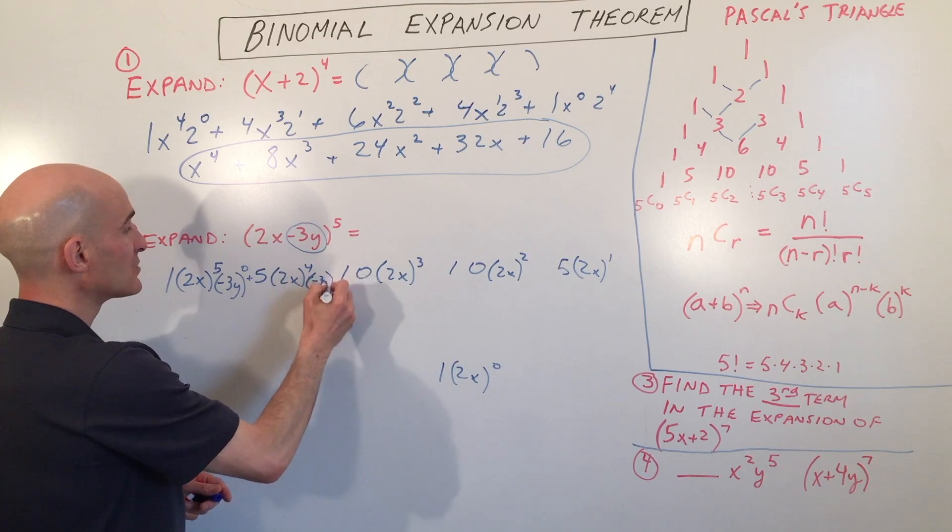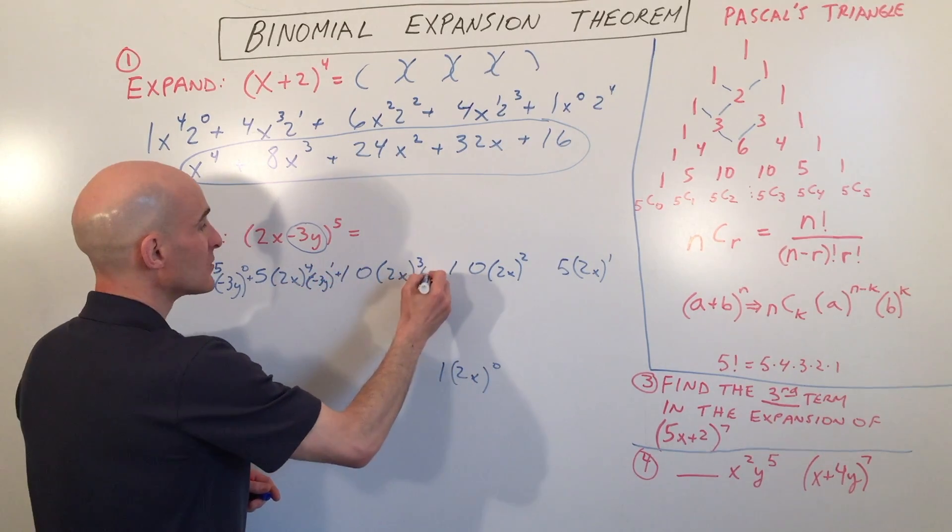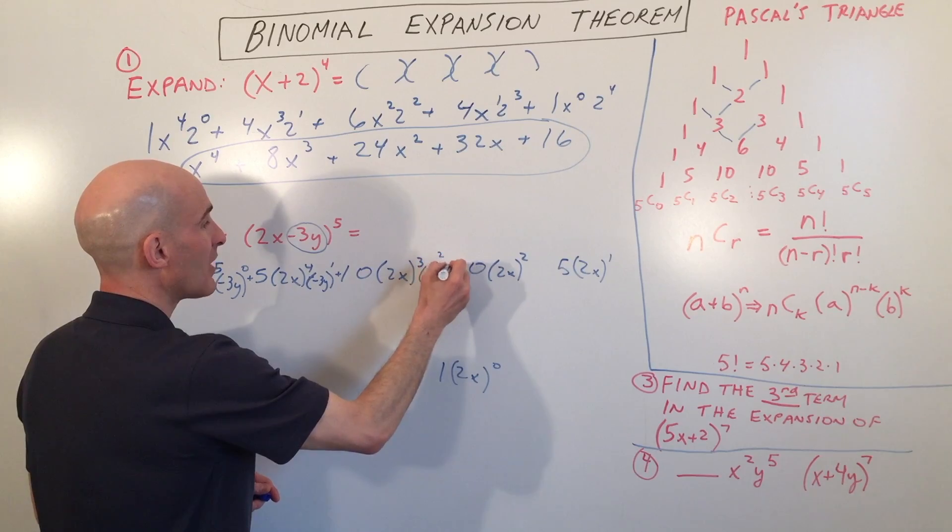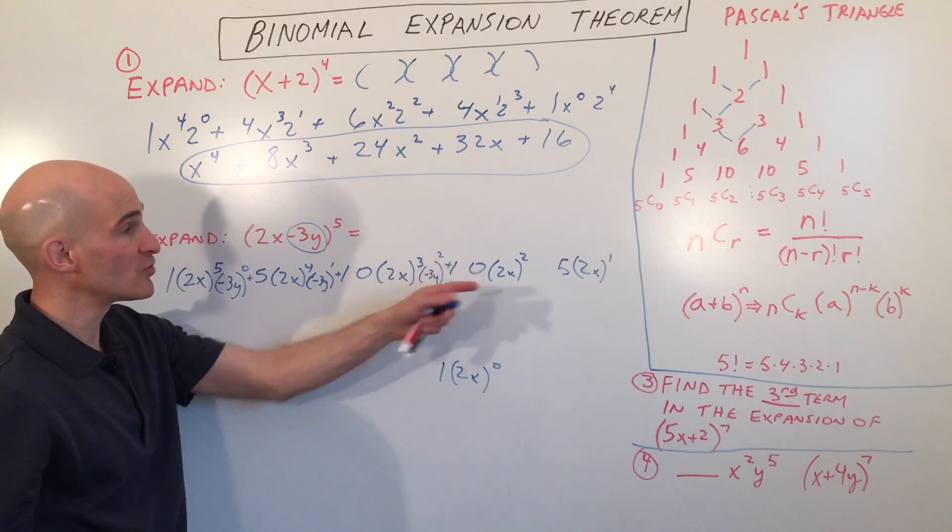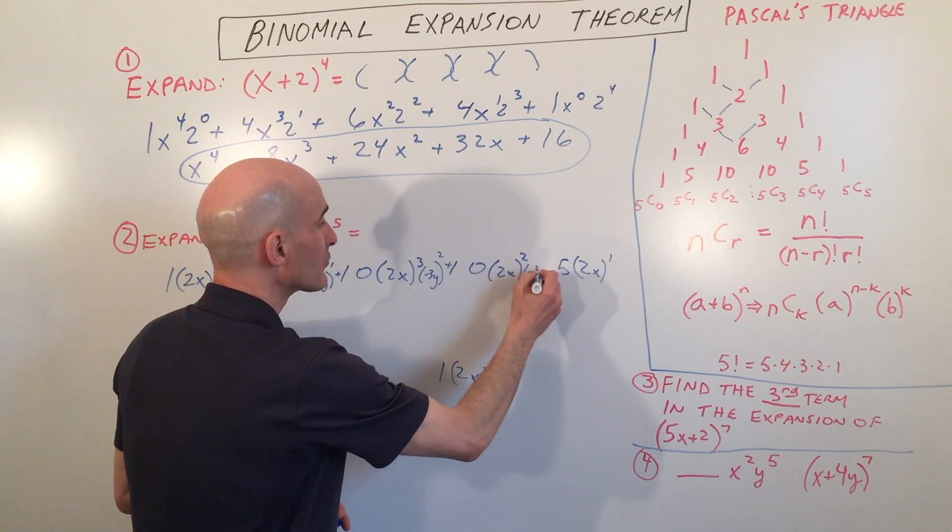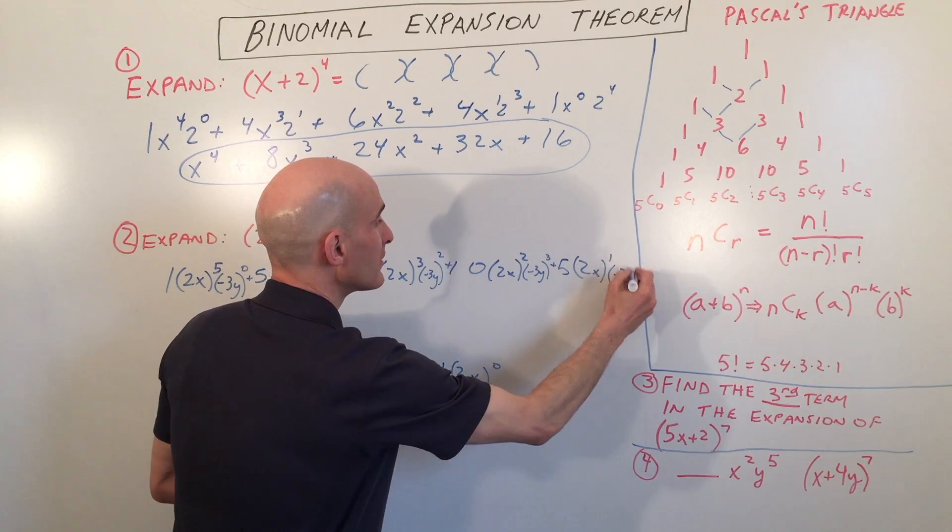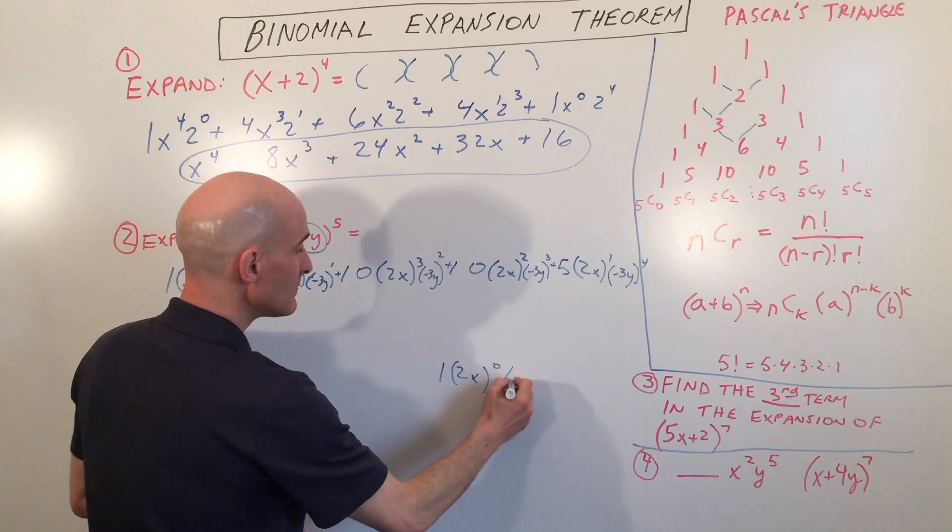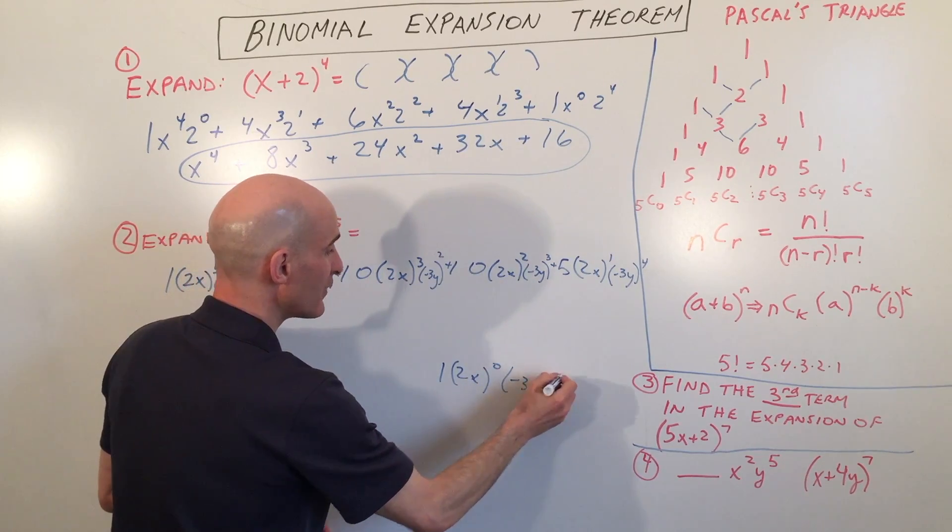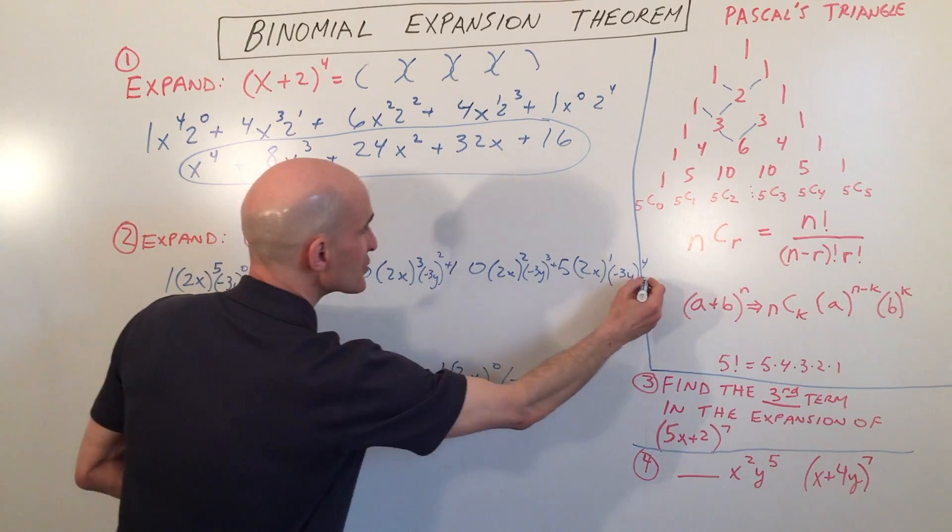This is going to be negative 3y to the second power. And notice there's just an addition sign in between all these terms, negative 3y to the third, negative 3y to the fourth, and negative 3y to the fifth. And these are just all added together.